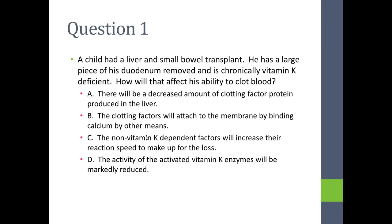Question 1: A child had a liver and small bowel transplant. Because of this, a large piece of his duodenum was removed and he is chronically vitamin K deficient, because vitamin K is absorbed in that part of the intestine. How will this affect his ability to clot blood? A, decreased amount of clotting factor protein produced in the liver. B, the clotting factors will attach to the membrane by binding calcium through other means. C, non-vitamin K dependent factors will increase their reaction speed to make up for the loss. D, the activity of the activated vitamin K enzymes will be markedly reduced. The answer is D.